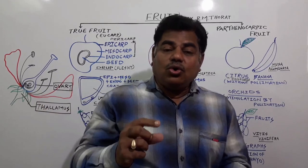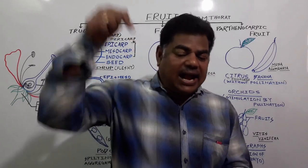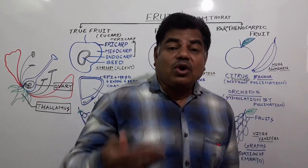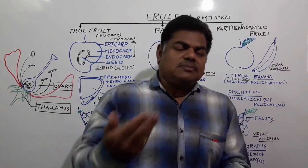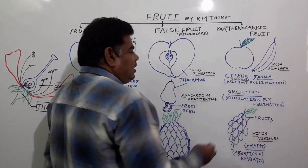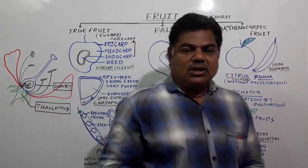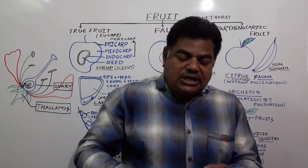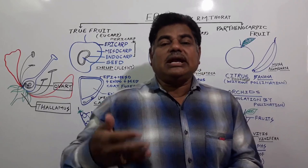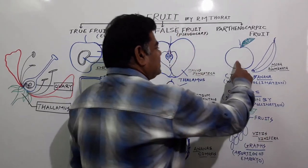In banana flowers, the ovary ripens naturally — fruit formation takes place without pollination or fertilization — and inside the fruit there is no seed. Such fruits are parthenocarpic fruits. But there are some plants in which seed formation is there; for example in citrus, seed formation occurs, but those seeds do not germinate. Fruit formation takes place and the ovary ripens, but the seed does not reproduce — polyembryony-like conditions are present. Such fruits are also called parthenocarpic fruits.